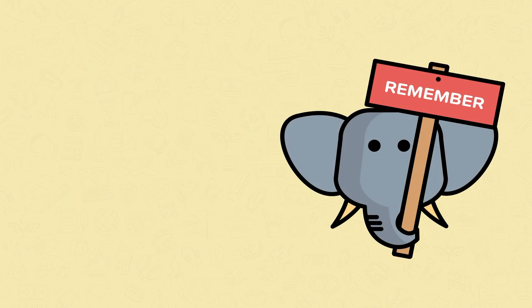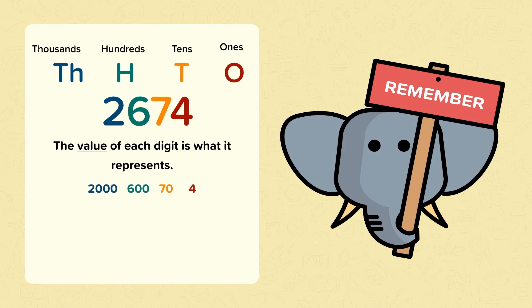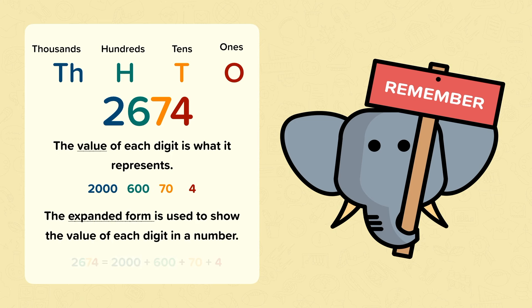So remember, a four-digit number is made up of thousands, hundreds, tens and ones. The value of each digit is what it represents. And the expanded form is used to show the value of each digit in a number.